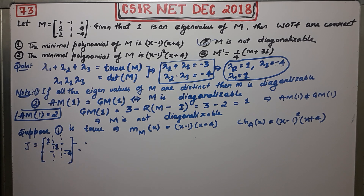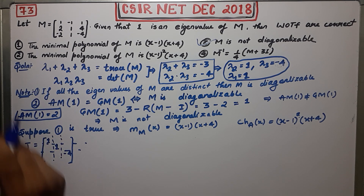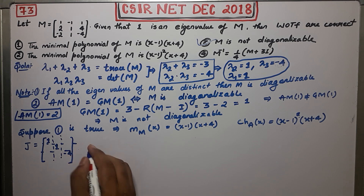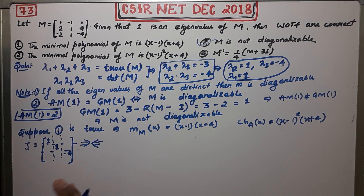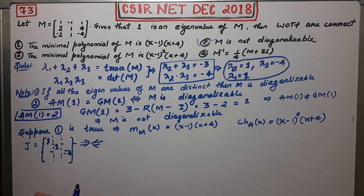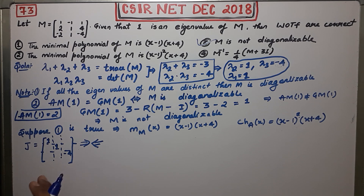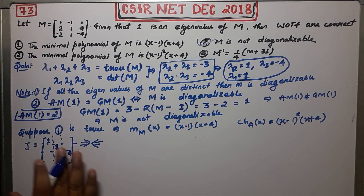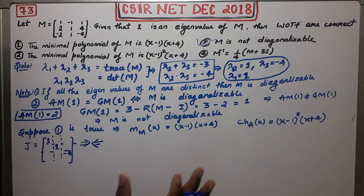Since every matrix is similar to its Jordan canonical form, and that Jordan form is diagonal, M would be diagonalizable. But this is a contradiction — we already proved M is not diagonalizable. Therefore option one cannot be the correct minimal polynomial.